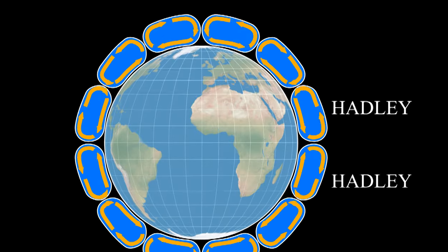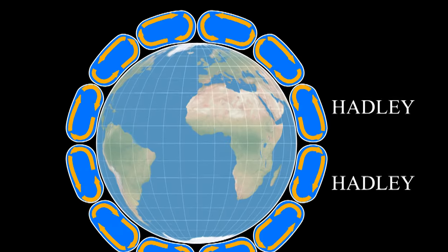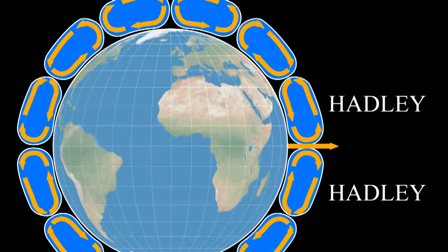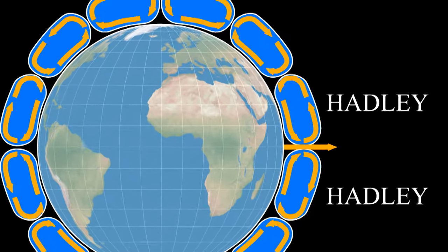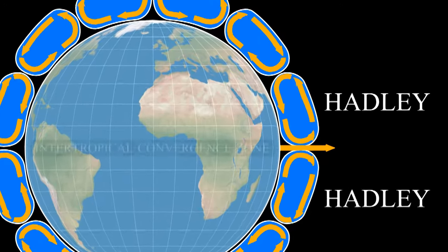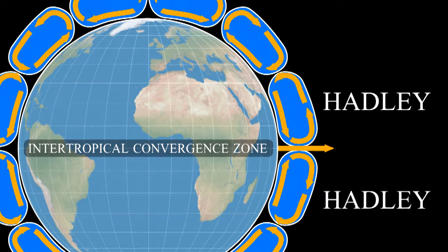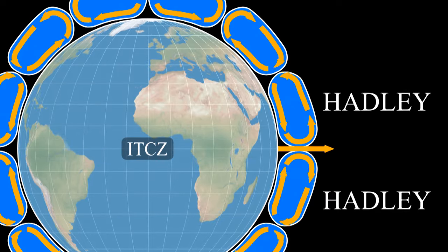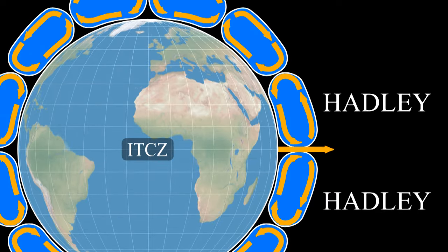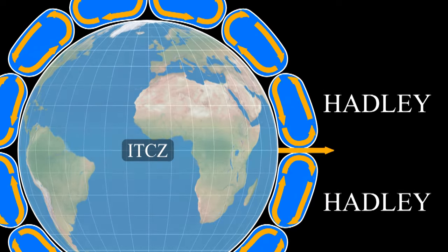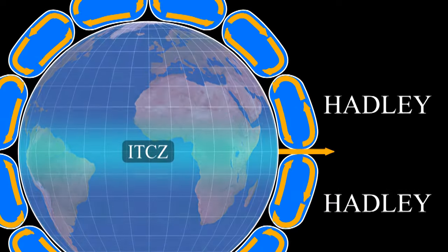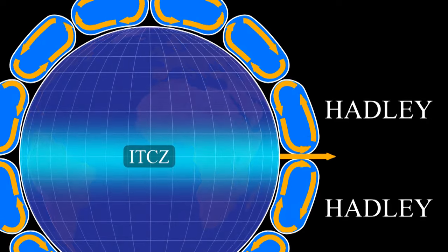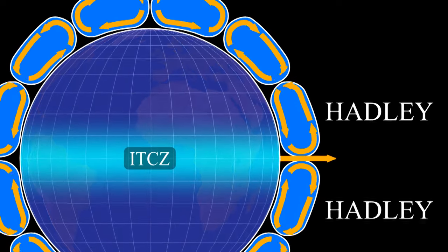Between the Hadley cells, we have air that's rising because the equator is so hot. This region is called the Intertropical Convergence Zone, or the ITCZ. The ITCZ is one of the wettest parts of the planet — this is where we have the tropical rainforests.